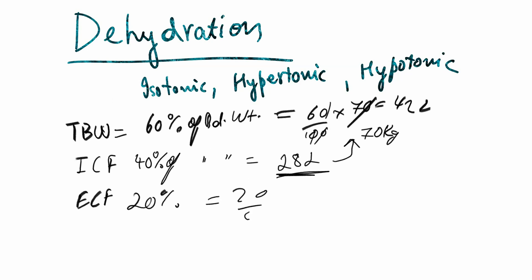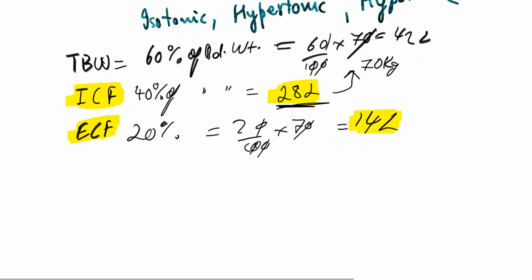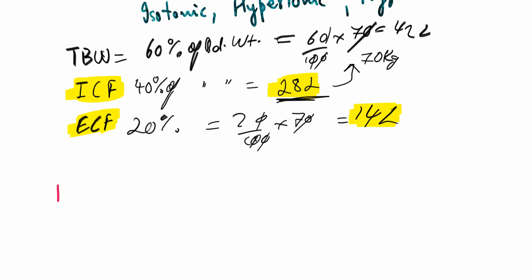The extracellular fluid is about 20% of body weight, which is about 14 liters. For the dehydration topic we need to only know about the intracellular fluid, which is about 28 liters, and the extracellular fluid, which is about 14 liters.